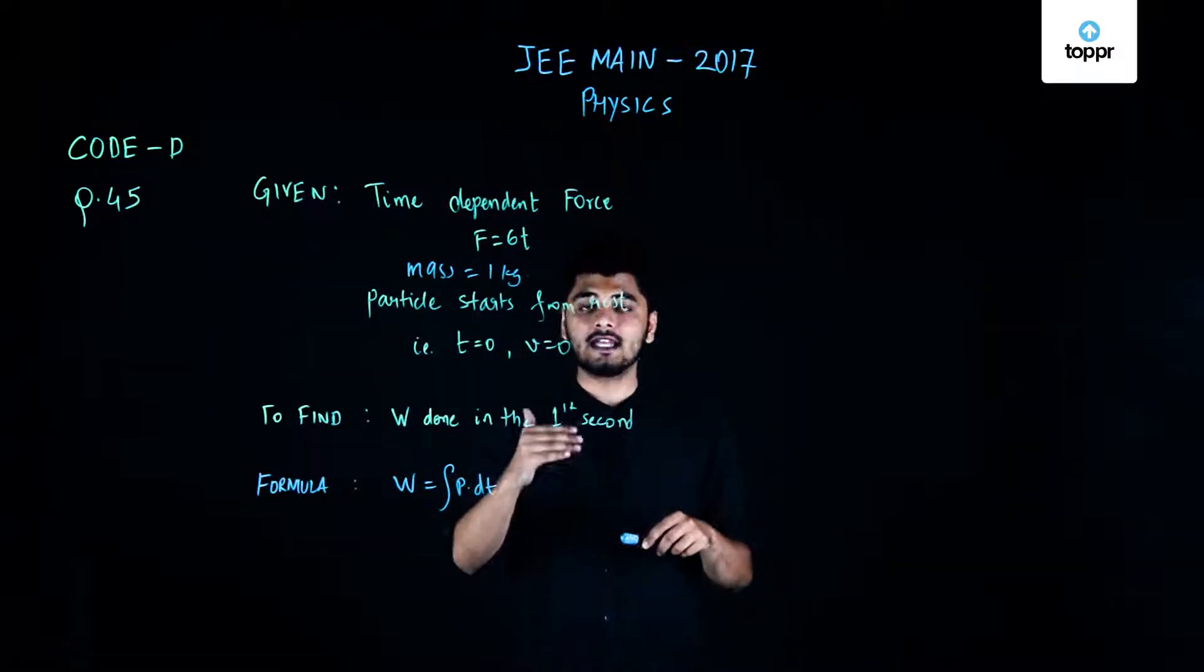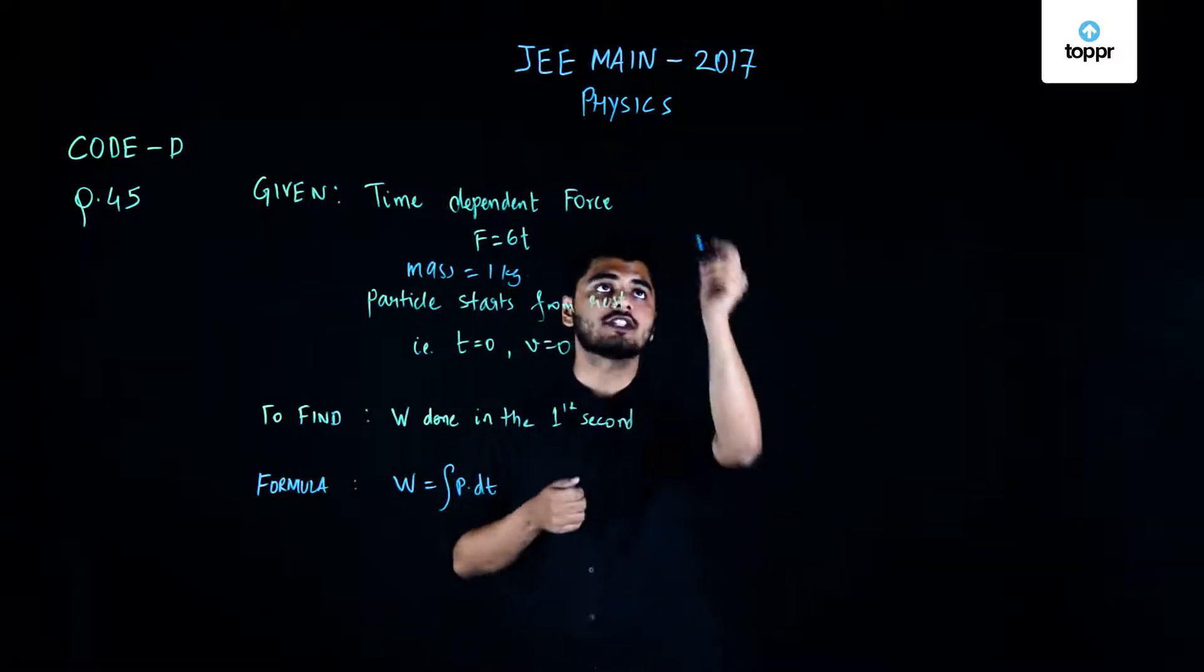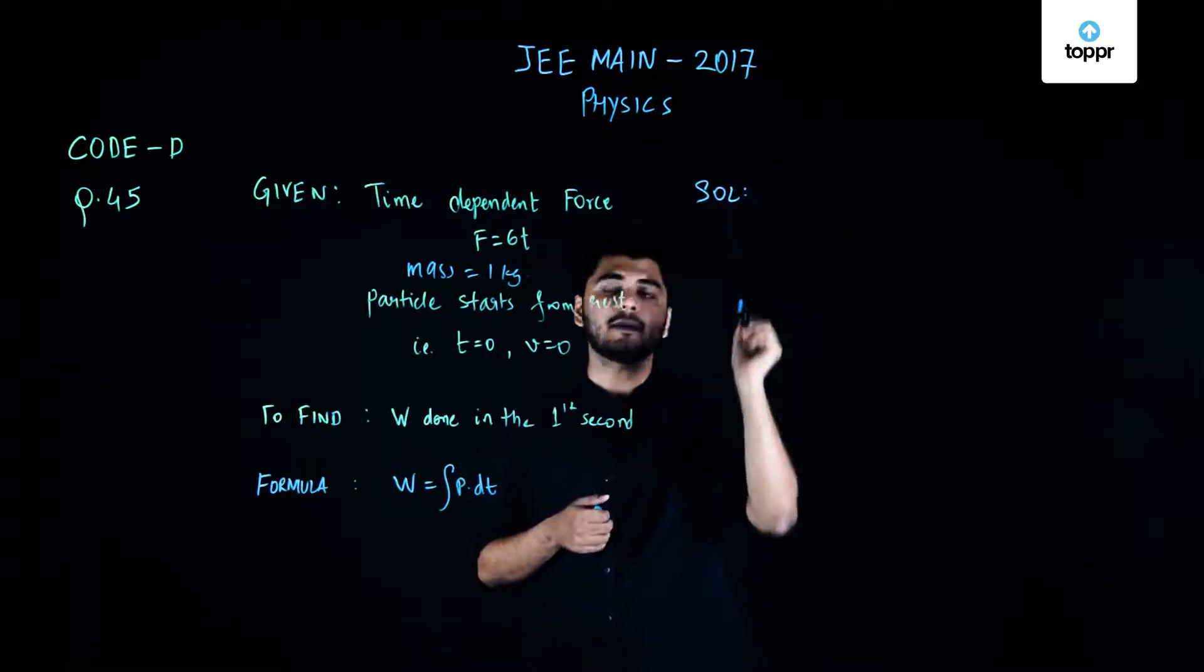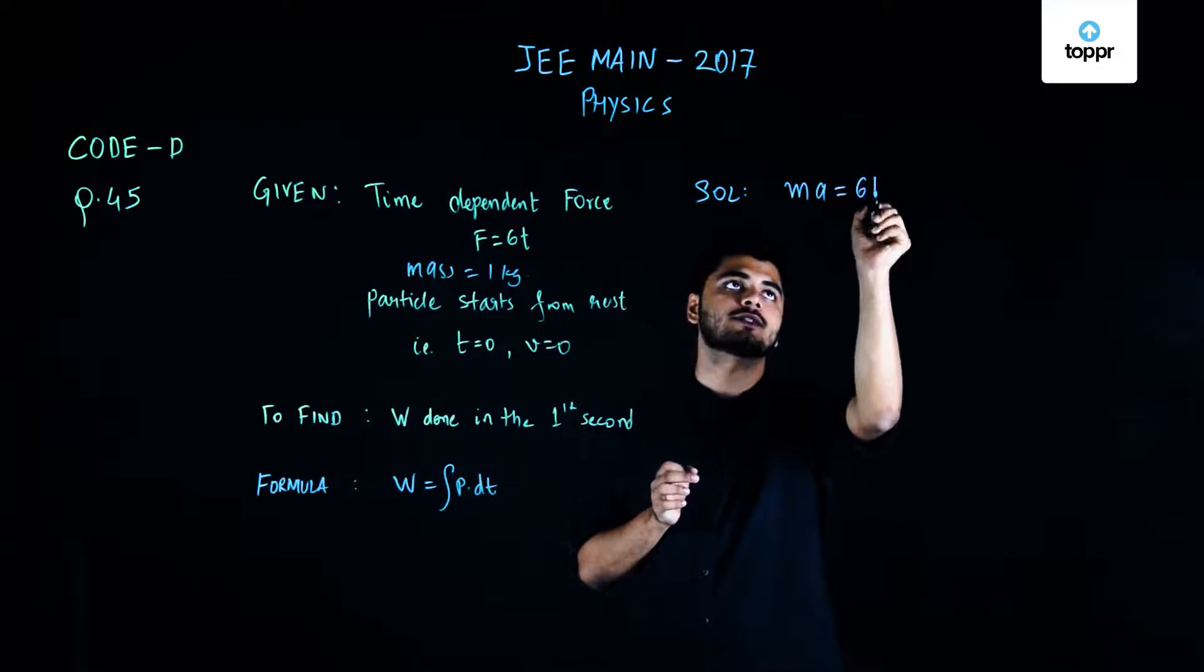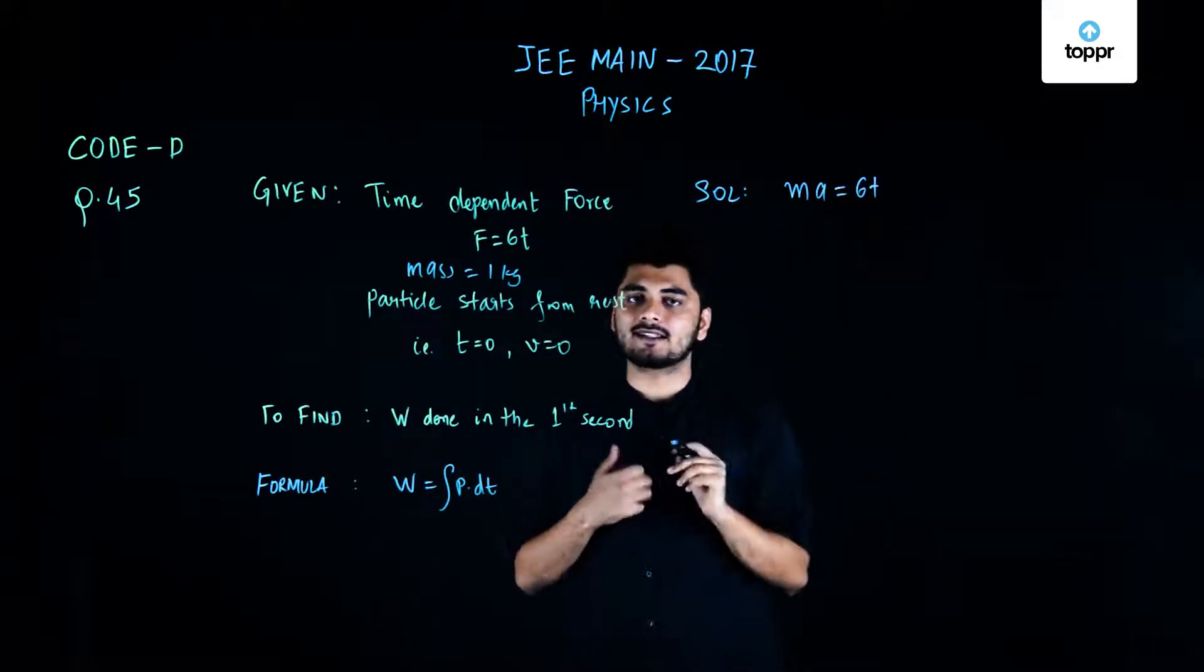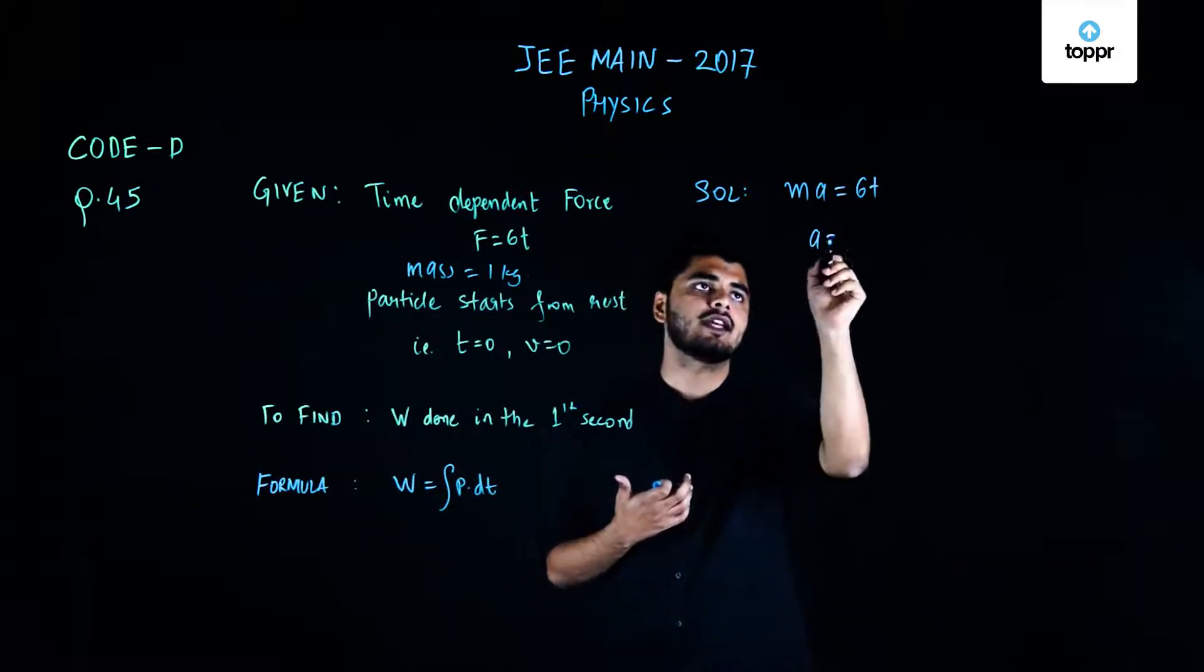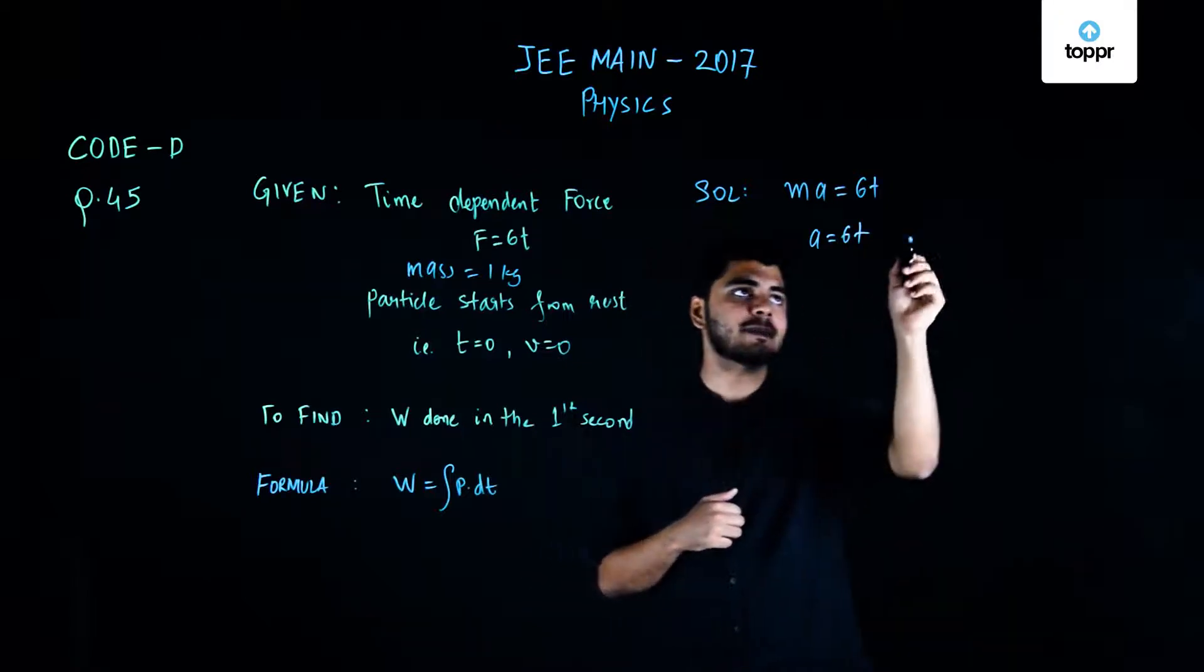So we'll first start by calculating all these terms. The solution begins by me writing force equals mass times acceleration equals 6t. Now since I know that my mass is equal to 1 kg, my acceleration would be 6t. So this first step is fairly simple.